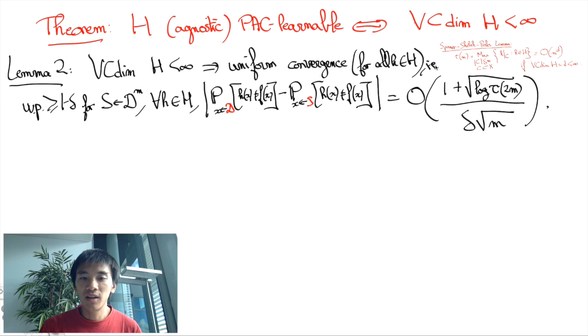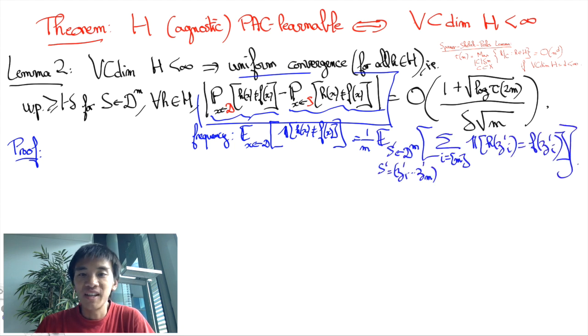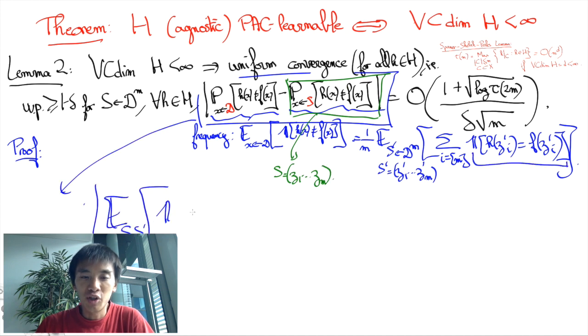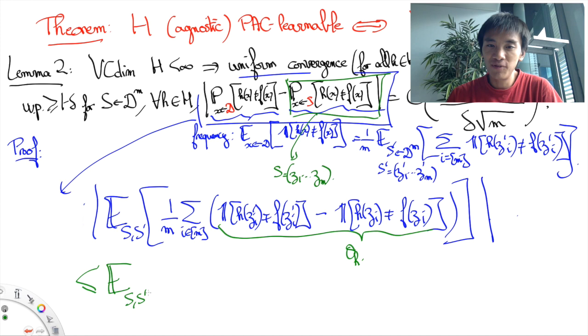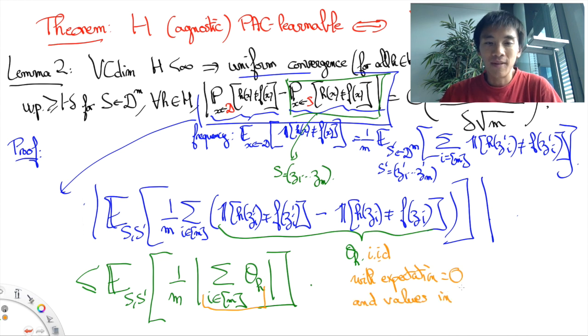The sketch of the proof of this lemma goes as follows. The probability of misprediction is equal to the expected frequency of mispredictions on a sample set S prime of size M. Using a generalization of the triangle inequality, we can upper bound the expectation of the difference between the sample set and the distribution D, as measured by the probability of mispredictions, by the absolute value of the expectation of the sum of minus 1, 0, or plus 1 independent random variables, whose expected values are equal to 0. This resembles the hypothesis of the central limit theorem, and intuitively, this will lead to high concentration around the expected value, which in this case is 0.